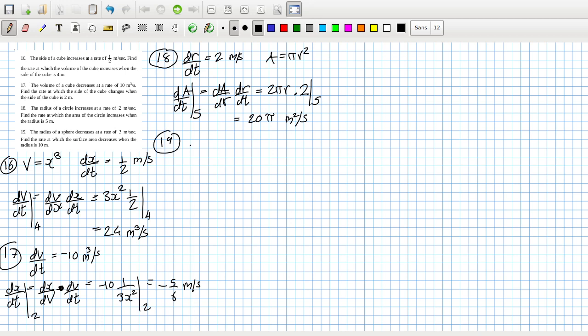19, the radius of the sphere, dr dt decreases minus 3 metres per second. Find the rate at which the surface area decreases. So the area is 4 pi r squared, so da dt is da dr times dr dt, which will be minus 3, and then da dr is 12 pi r squared.